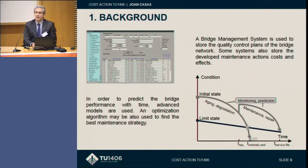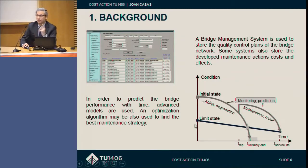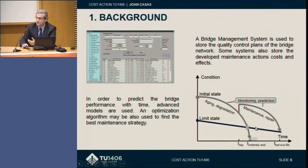Normally, in order to manage the existing infrastructure — mainly in pavements and bridges — you use a bridge management system. A system used to store the quality control plans of the bridge network, where starting from some condition of the infrastructure, we have to see which is the deterioration curve and when we will arrive at some limit state, controlling all this based on quality control.